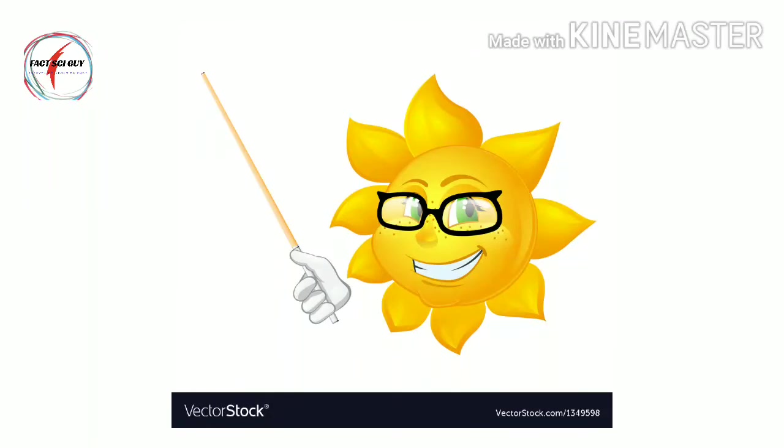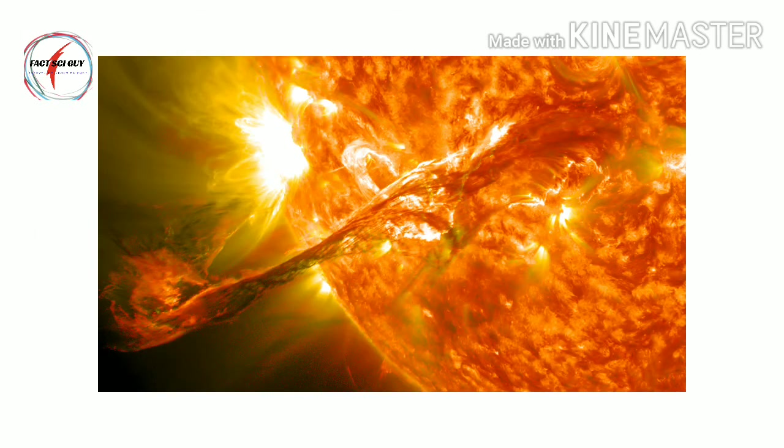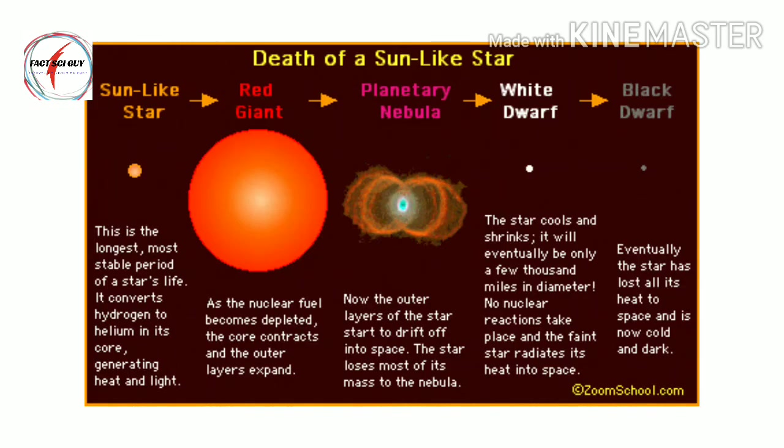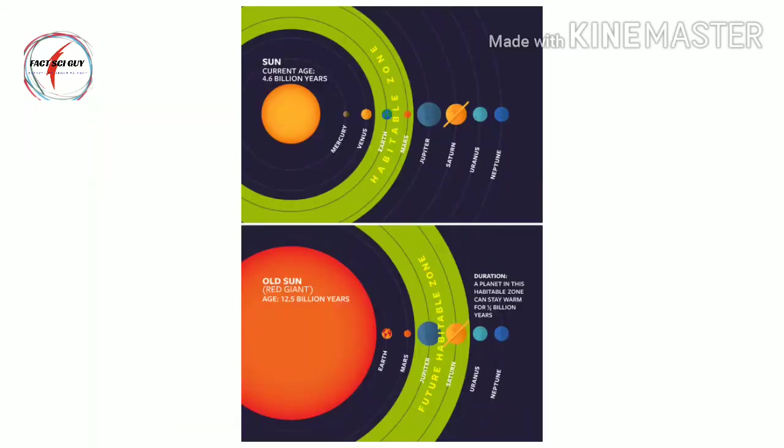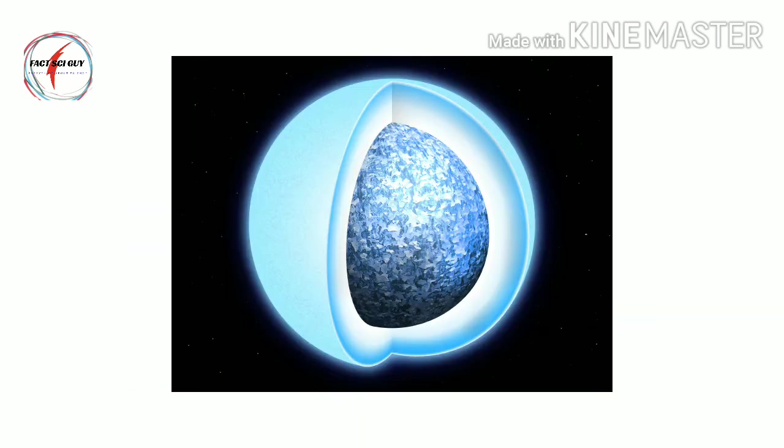Like all stars, sun will someday run out of energy. When the sun starts to die, it will swell so big that it will engulf Mercury and Venus, and maybe even Earth. Scientists predict that the sun is a little less than halfway through its lifetime and will last another 6.5 billion years before it shrinks down to a white dwarf.